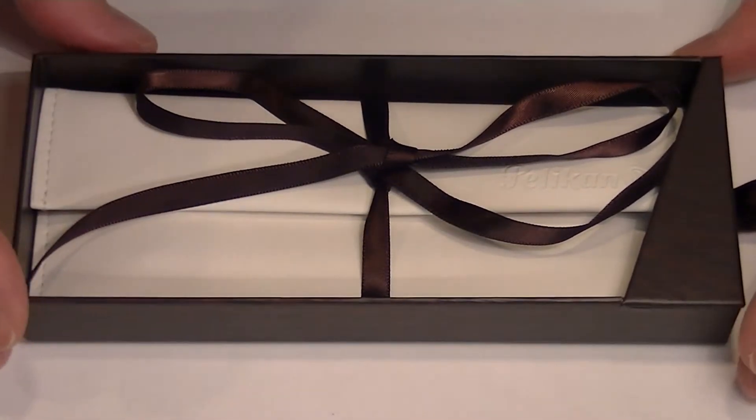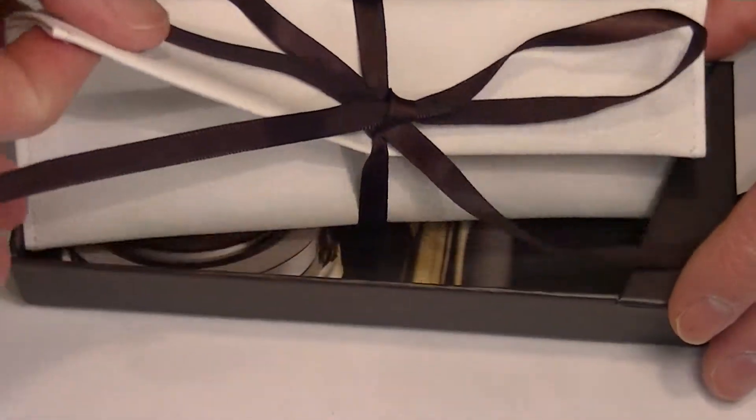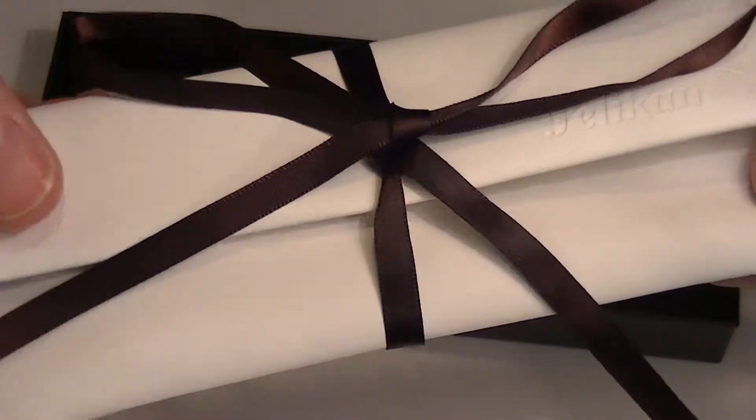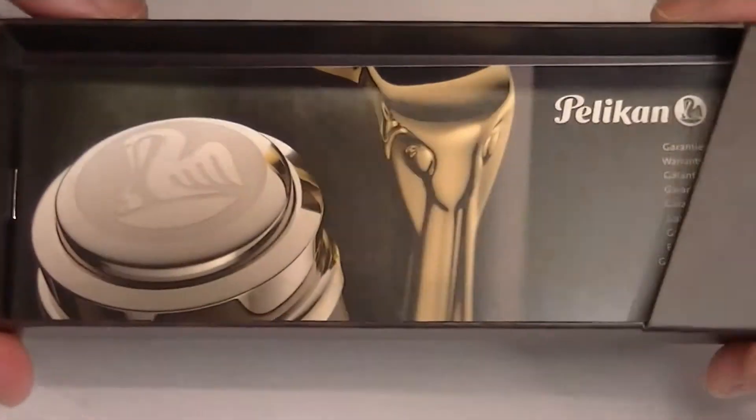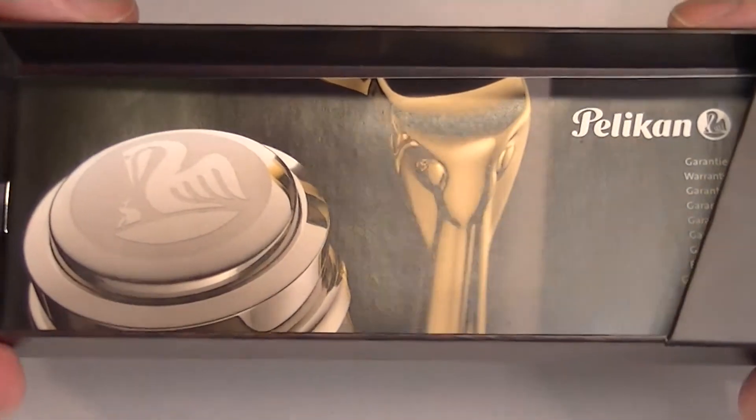Inside of that box is a brown cardboard box with a nice soft leather pouch containing the pen. In the bottom of the box we have the informational instructions about the Pelican pens.